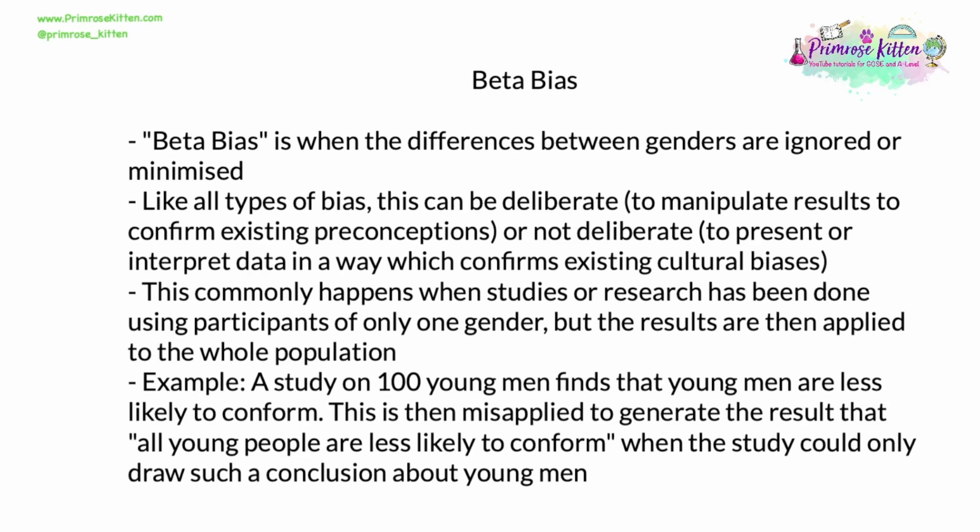Beta bias is the exact opposite of alpha bias. It's when the differences between the genders are ignored or minimized. Like all types of bias, this can be deliberate — for example, to manipulate results in order to confirm existing stereotypes, preconceptions, or even political views. Or it can be accidental: presenting or interpreting data in a way which confirms existing cultural biases without meaning to. This commonly happens when studies use participants of only one gender, but the results are then generalised and applied to the whole population. For example, a study on 100 men finds that young men are less likely to conform, but this is then misapplied to generalise that all young people are less likely to conform, when the study could only draw such a conclusion about young men.